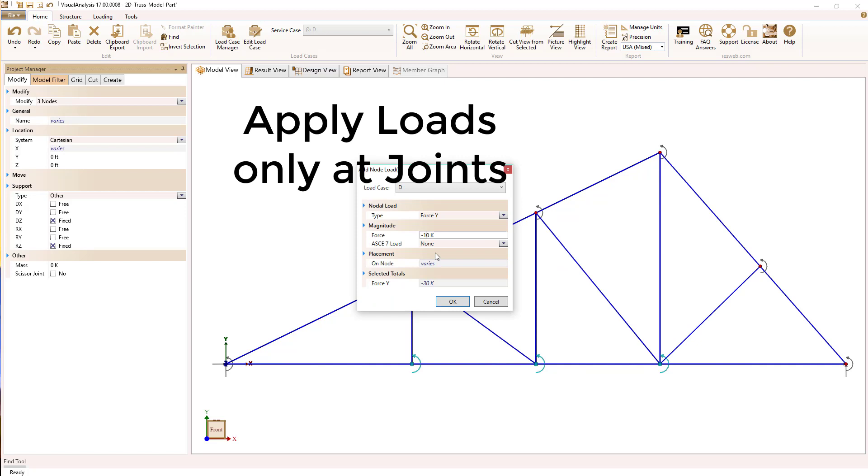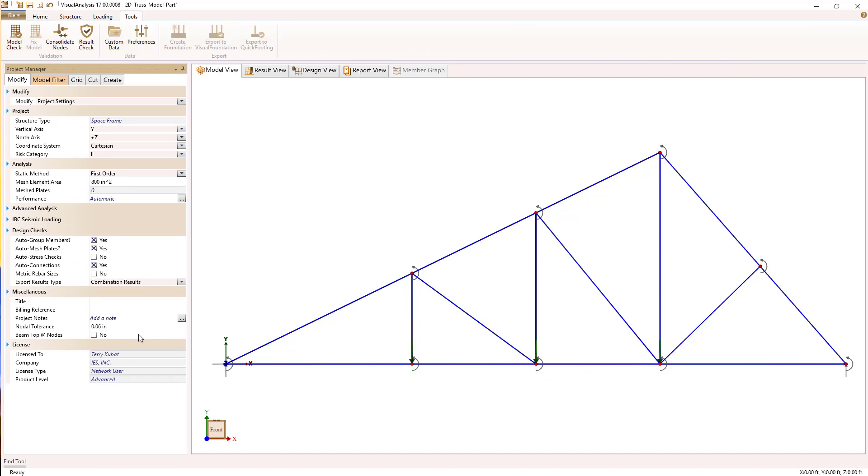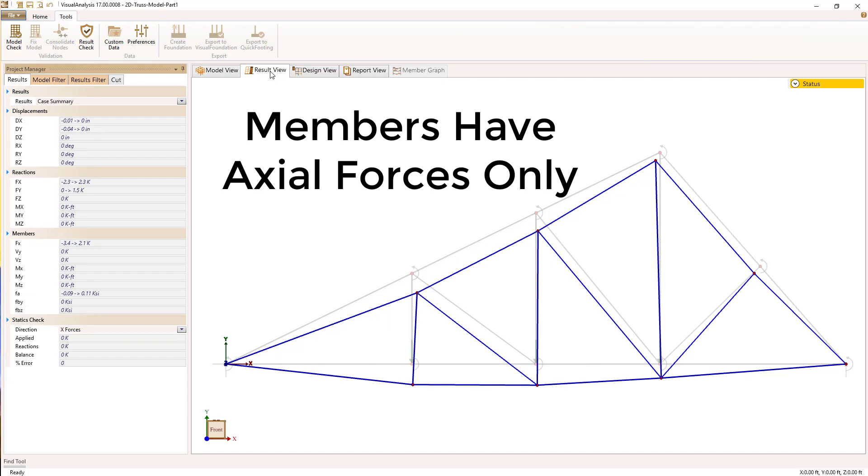Finally, the only loads you should apply are nodal loads. If you apply member loads, the members will bend. But that's it. If you want to create an unrealistic pure academic truss, that's how you would accomplish it.